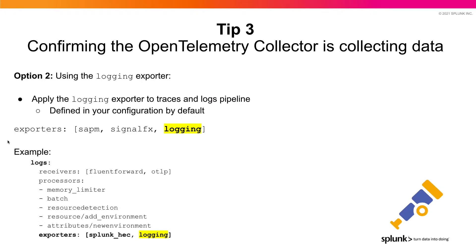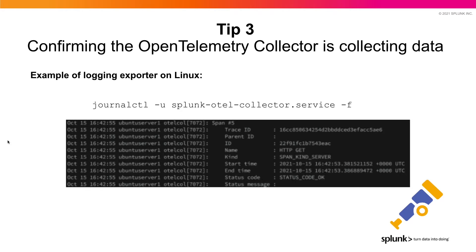Another great way to visualize if your collector is collecting and exporting data is to enable the logging exporter. Navigate to the OpenTelemetry collector's configuration file and enable the logging exporter as part of your traces and logging pipeline. You can see an example where logging is specified next to the SplunkHec exporter. On Linux, run the journalctl command and you'll see the logging exporter show all telemetry data exported on your terminal screen.